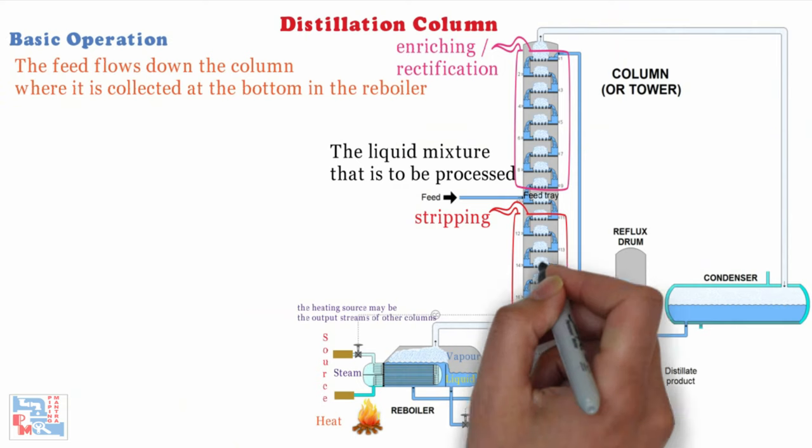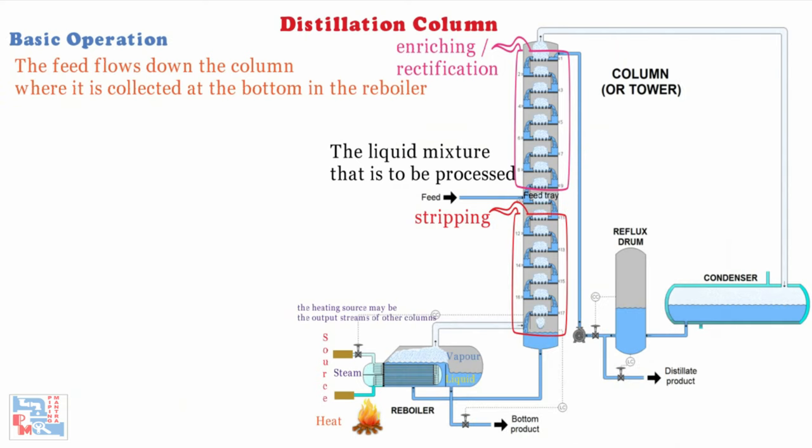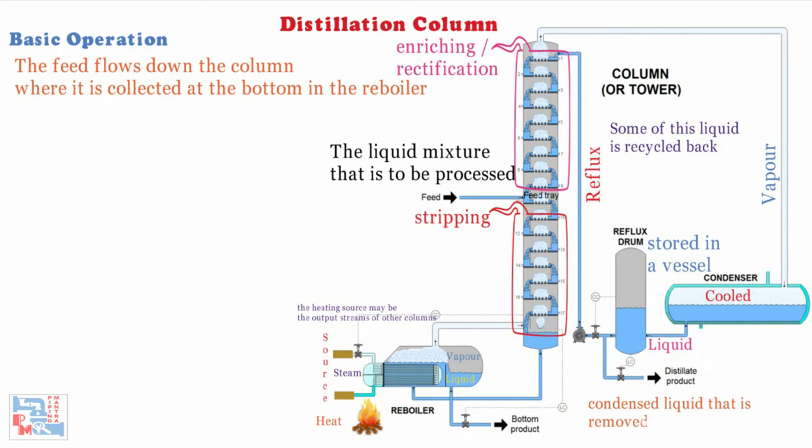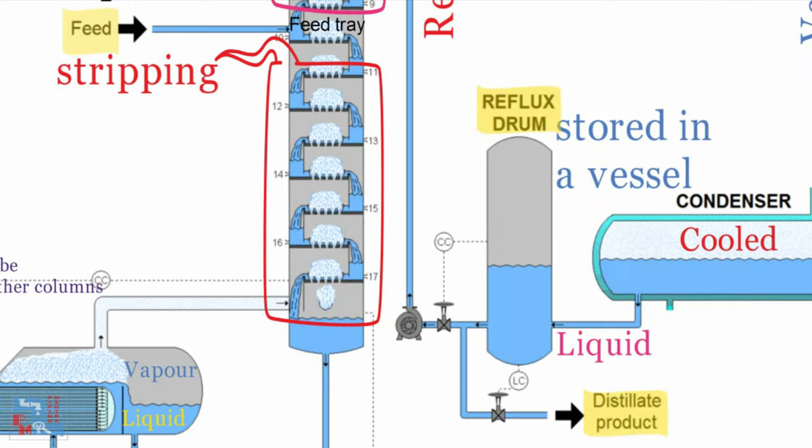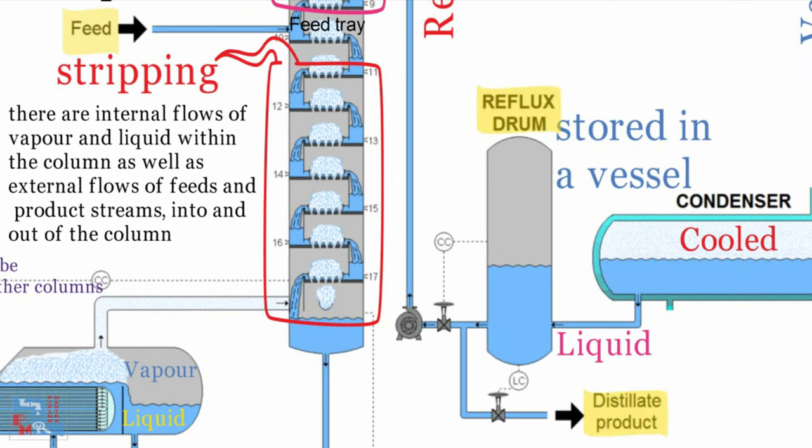The vapor moves up the column and as it exits the top of the unit it is cooled by a condenser. The condensed liquid is stored in a holding vessel known as the reflux drum. Some of this liquid is recycled back to the top of the column and this is called the reflux. The condensed liquid that is removed from the system is known as the distillate or top product. There are internal flows of vapor and liquid within the column as well as the external flows of feeds and product streams into and out of the column.